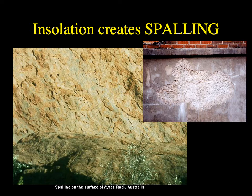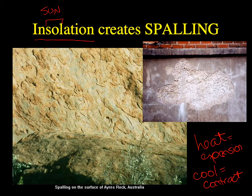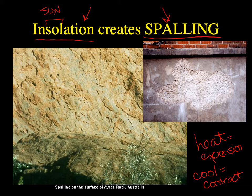Another example of physical weathering is insolation — spelled S-O-L, meaning sun. Heat causes expansion, and then at night the rocks cool down and contract. This heating and expansion process creates a weathering reaction called spalling, where the rock almost looks like it's flaking off. Every day the rock sits in hot sun and expands, then contracts at night — the outer edge of the rock starts to flake apart.